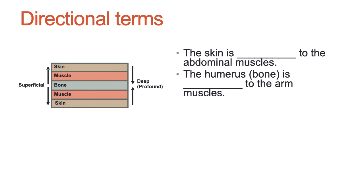The last set of directional terms relates to depth into the body: superficial and deep. The closer an area is to the surface of the body — to the skin — the more superficial it is. The further into the body it goes, the deeper it is. For example, skin is more superficial than muscle, and muscle is more superficial than bone. The skin is superficial to the abdominal muscles, and the humerus bone is deep to the arm muscles.